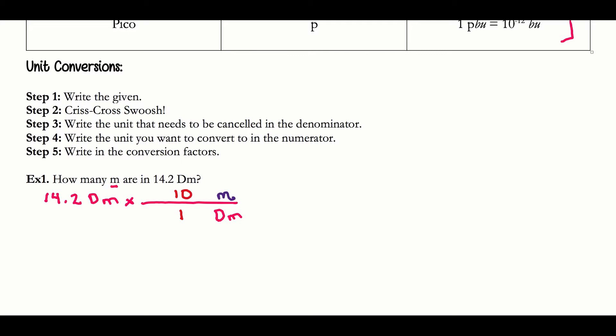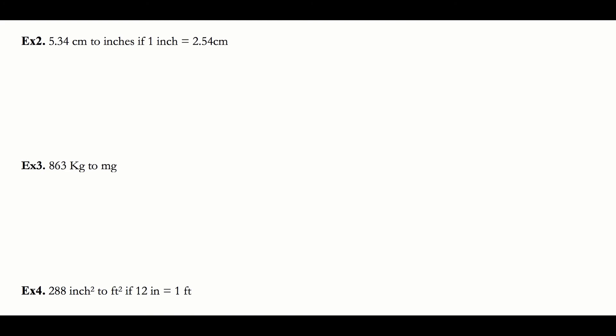I take 14.2 and, because my number is in the numerator, I multiply. If it were in the denominator I would divide, but it's in the numerator, so I take 14.2 and multiply by 10, giving me 142 meters. Before finishing, check two things: significant figures — 14.2 has three sig figs, and 142 also has three sig figs, so I'm good. The conversion factor 10 meters = 1 decameter is a relationship and doesn't count. I also have units — meters — so I'm done.